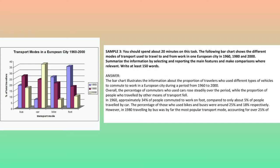Overall, the percentage of commuters who used cars rose steadily over the period, while the proportion of people who traveled by other means of transport fell. In 1960, approximately 34% of people commuted to work on foot, compared to only about 5% who traveled by car.